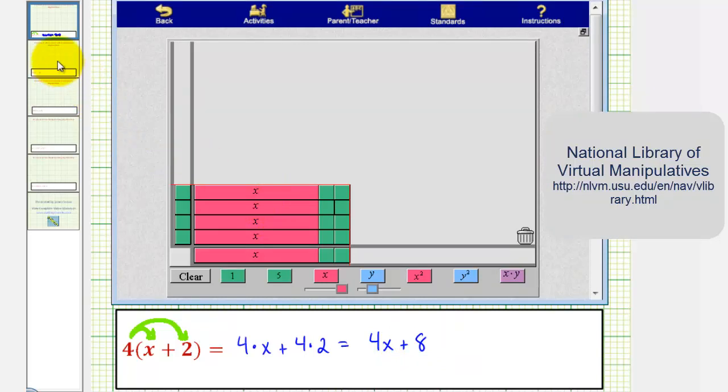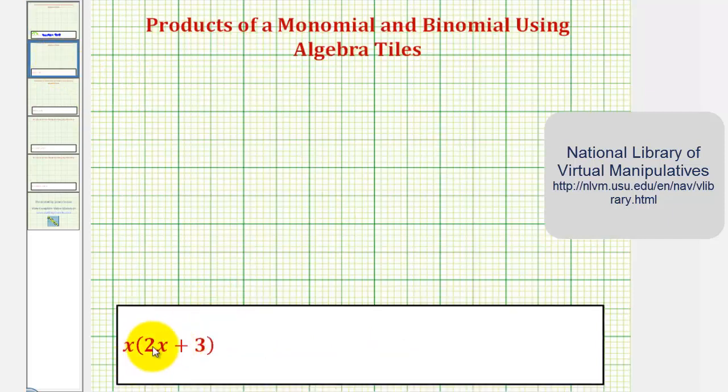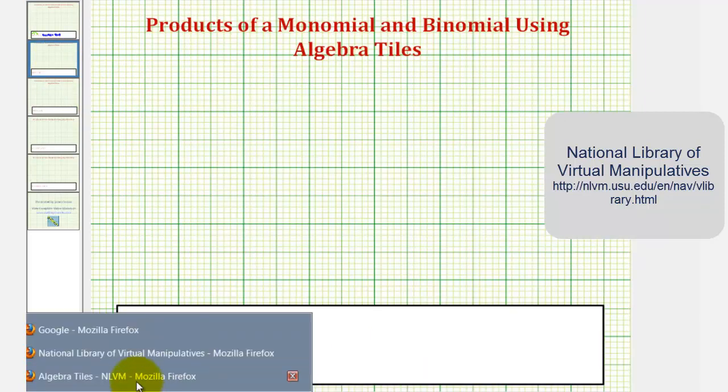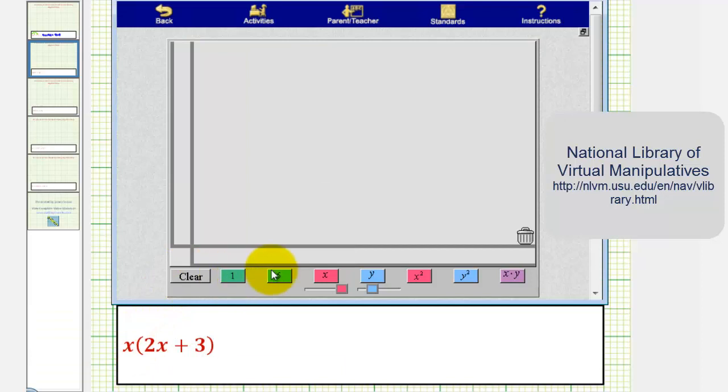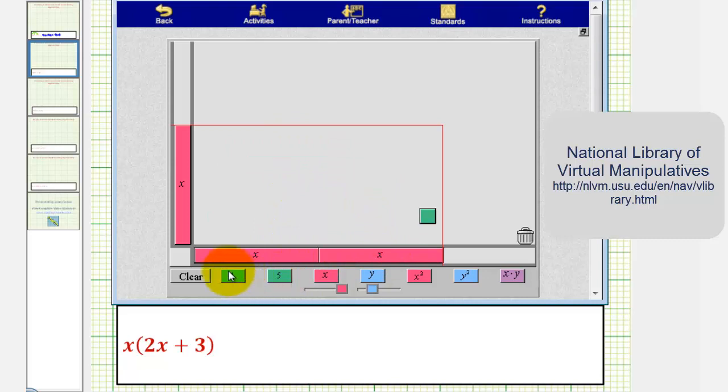Let's take a look at one more example. Here we have x times the quantity two x plus three. So we'll first model x vertically using this x tile. And we'll model two x plus three horizontally with two x tiles and three one tiles.